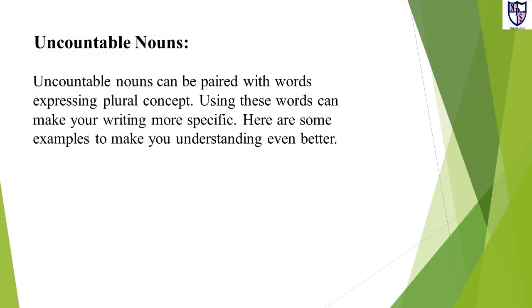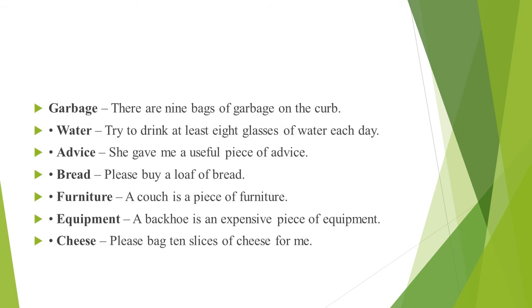Uncountable nouns can be paired with words expressing plural concepts — using these words makes your writing more specific. Examples: Garbage — there are 9 bags of garbage on the curb. Water — try to drink at least 8 glasses of water each day. Advice — she gave me a useful piece of advice. Bread — please buy a loaf of bread. Furniture — a couch is a piece of furniture. Equipment — a backhoe is an expensive piece of equipment. Cheese — please bag 10 slices of cheese for me. The uncountable nouns are counted with the containers they are in or as a piece of them.